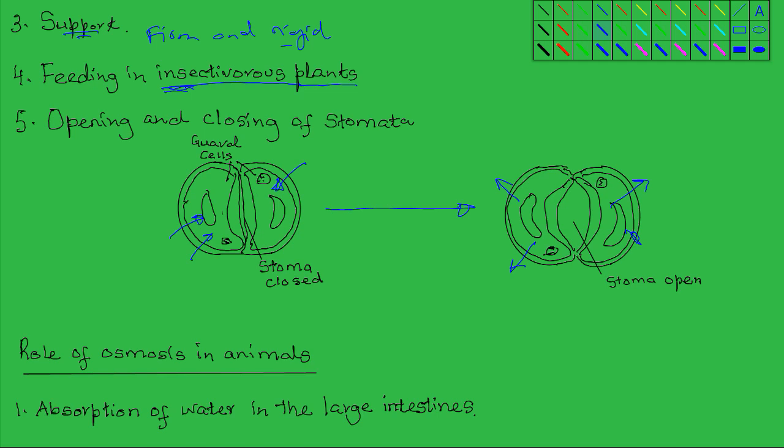When the guard cells are flaccid, the stoma is closed because the two guard cells lie side by side. But as they absorb water through osmosis, the guard cells become turgid and they tend to bulge outward because the inner lining has a thicker cell wall compared to the outer lining. So it's much easier for the cells to bulge outward away from one another, and in the process they create the stoma between them.